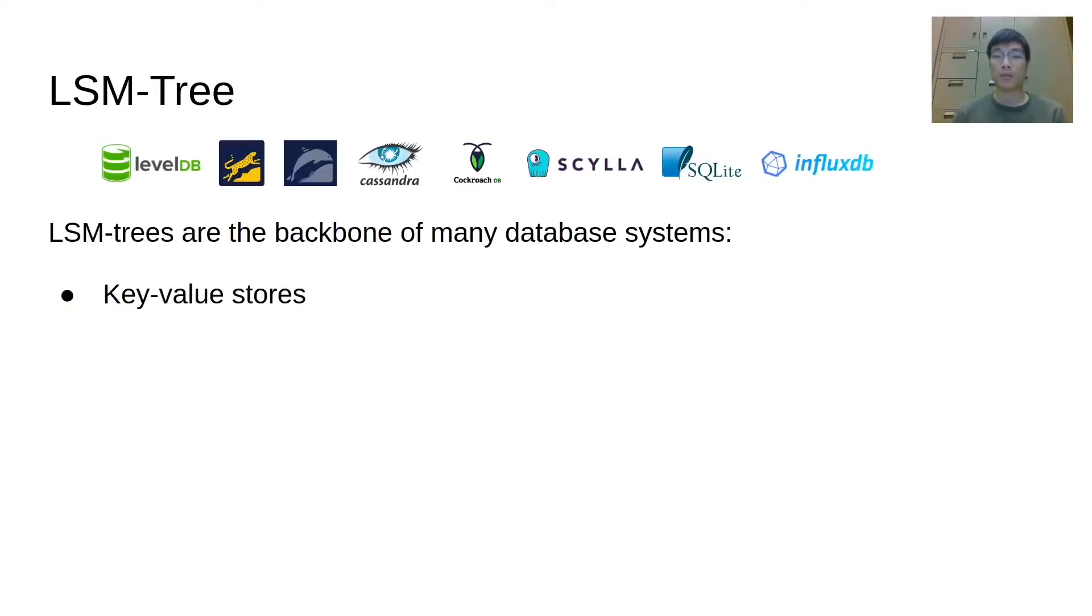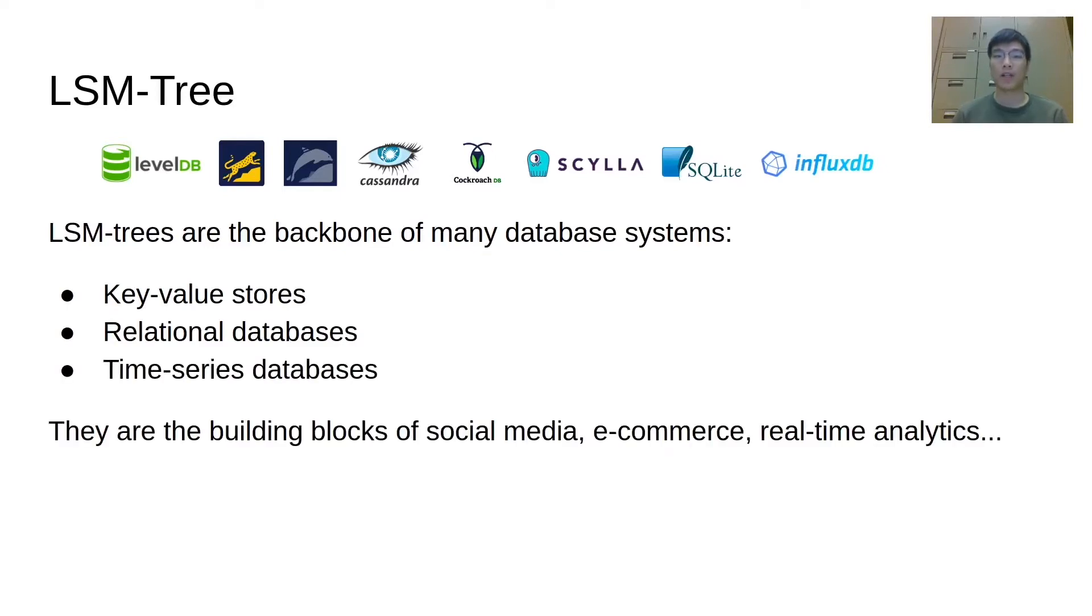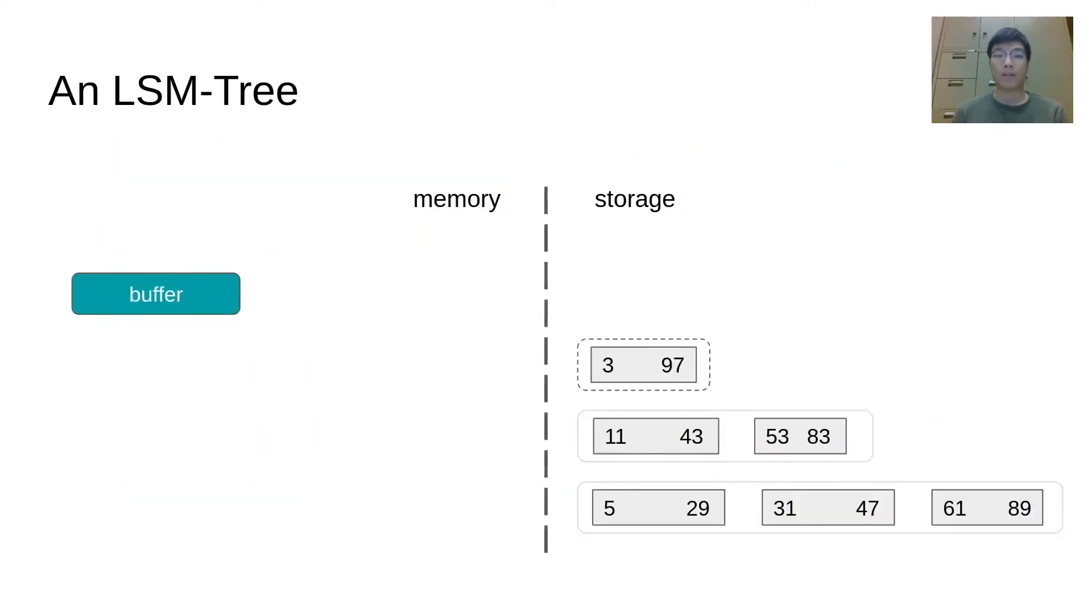LSM Trees are the backbone of many database systems. These systems are the building blocks of many modern applications. LSM Trees is essentially a write-optimized data structure. It buffers updates in a memory buffer. When the buffer fills up, it sort-merges the updates and flushes them to persistent storage. LSM Trees organize data in levels of increasing size. These levels usually overlap with each other. The data in a level will be gradually compacted to the next level. By writing updates in batch, LSM Trees achieves better write efficiency than traditional index structures, such as B-tree.